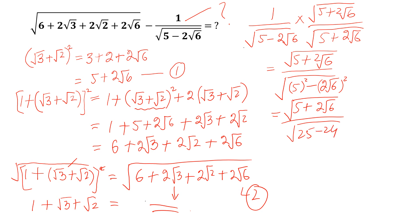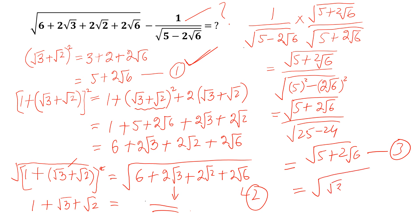And from equation 1, we know that 5 + 2√6 = (√3 + √2)², so √(5 + 2√6) = √3 + √2. This is equation 4.